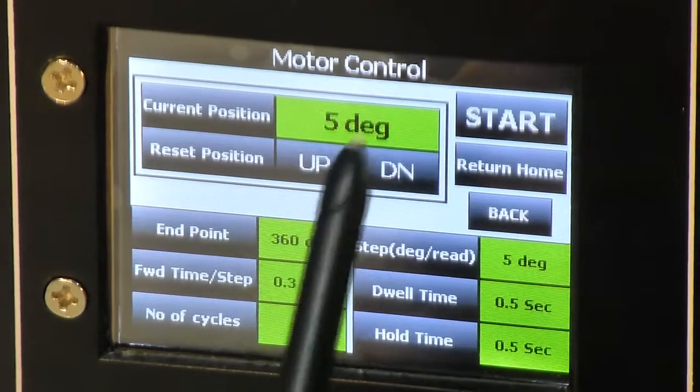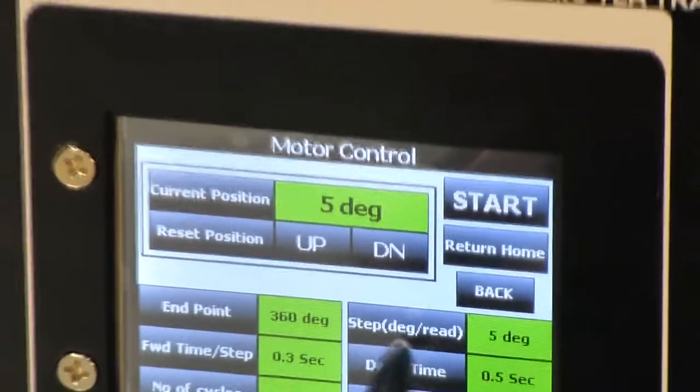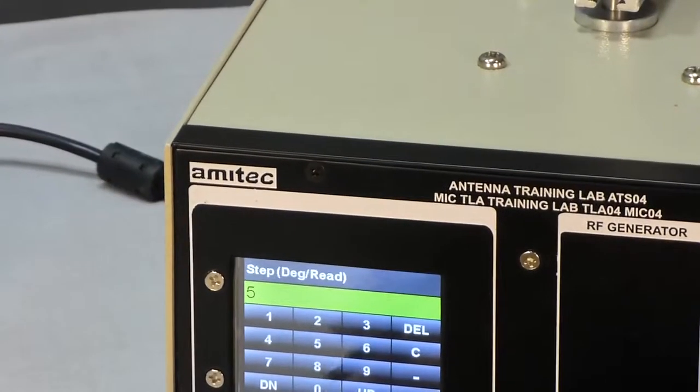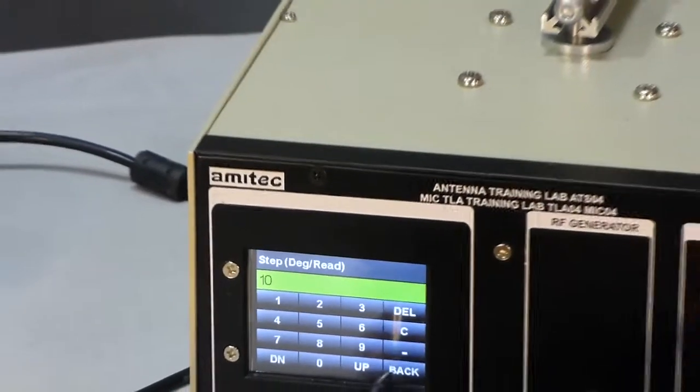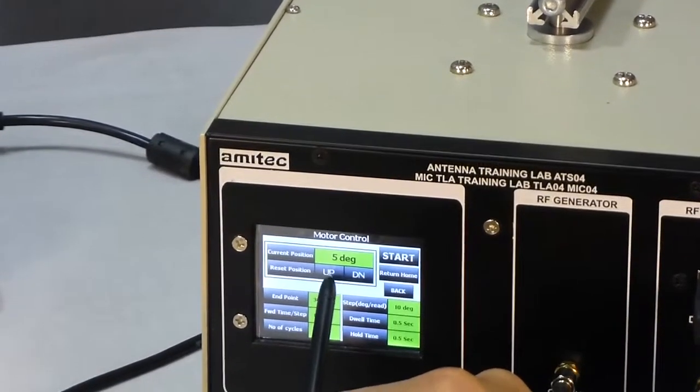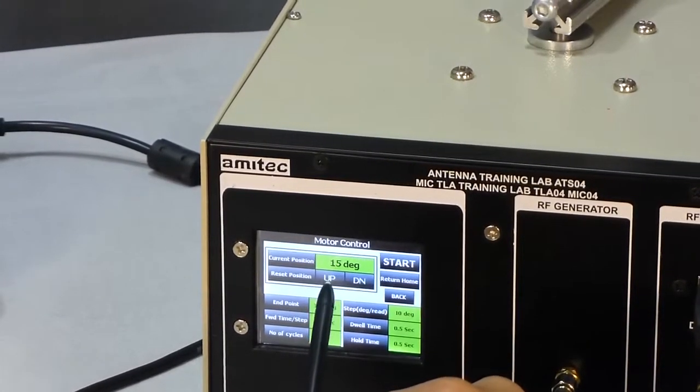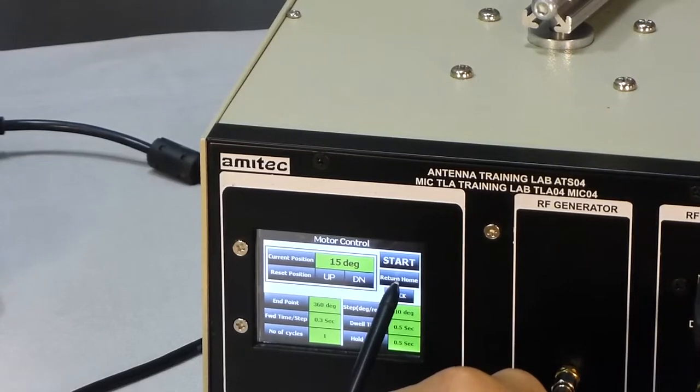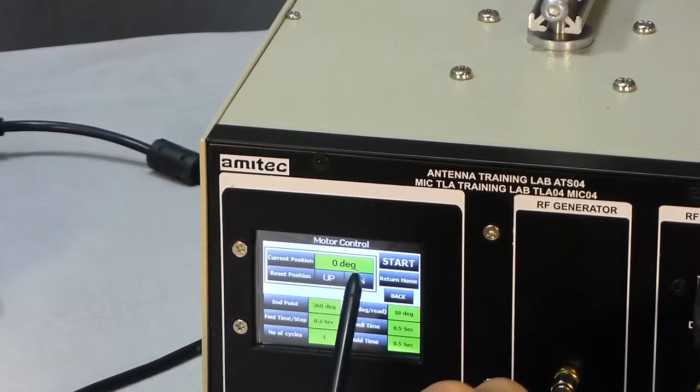Suppose if you press the up button, motor will rotate in clockwise direction by 5 degrees because the step size is set as 5 degrees. If you change the step size, let's say to 10 degrees and then again press the up button, motor will rotate in clockwise direction by 10 degrees. So it says now 15 degrees, 5 plus 10, 15 degrees. If you press the return home button, motor will rotate to its horizontal position and current position will be 0 degrees.